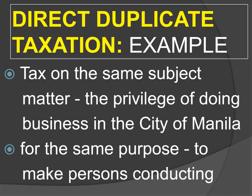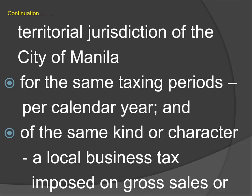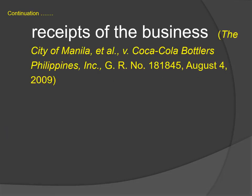What is an example of direct duplicate taxation? The Supreme Court said the tax was on the same subject matter — the privilege of doing business in the City of Manila — for the same purpose of making persons conducting business contribute to city revenues, to the same taxing authority (the City of Manila), within the same taxing jurisdiction, for the same taxing period, and of the same kind: a local business tax imposed on gross sales or receipts. You must also write the second element — taxing all for the first time without taxing all for the second time.